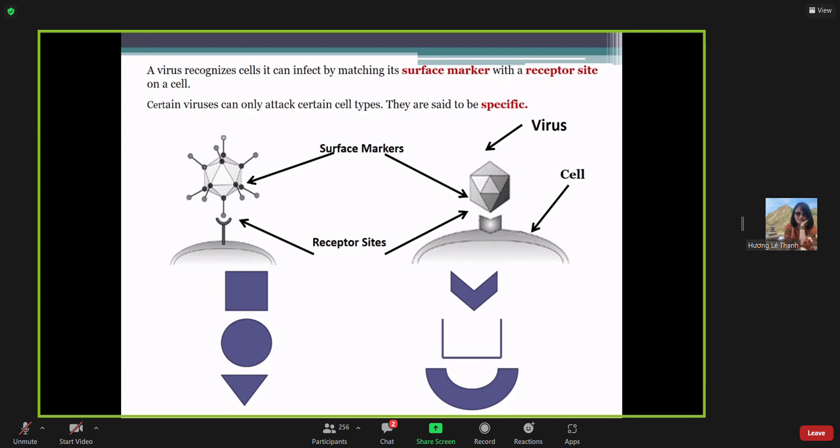A virus recognizes cells it can infect by matching its surface markers with a receptor on the cell. A certain virus can only attack certain cell types and they are said to be specific cells. We have surface markers here and in the host cells we have a receptor site. When they can bind and match each other, the host cells can be affected by the virus. Squares go with squares, circles go with circle receptors, and triangles go with triangle receptor sites. They are specific.